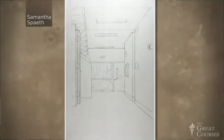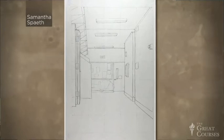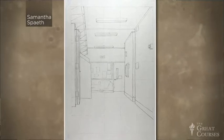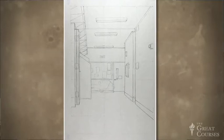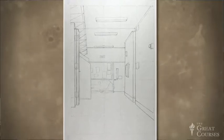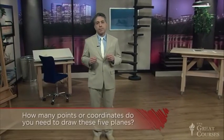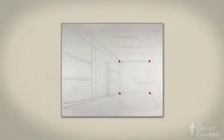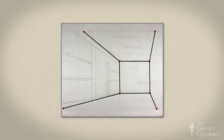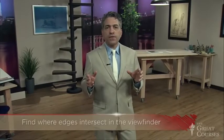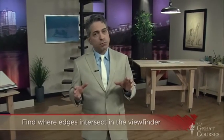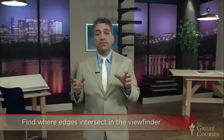The first thing to do is find a hallway or deep room. Look down your hallway through your viewfinder and frame it so you see five large planes: a back wall, the two side walls, the ceiling, and the floor. The viewfinder we've been using is a picture plane. How many coordinates do you need to draw these five planes? The answer is eight: four coordinates for the corners of the back wall, and another four where the diagonals projecting from the back wall meet the viewfinder. Find eight coordinates, connect the dots, and you'll have drawn the walls, ceiling, and floor — a strong proportionate beginning. A general premise is to find the places where edges intersect in the viewfinder and place those points on the page.